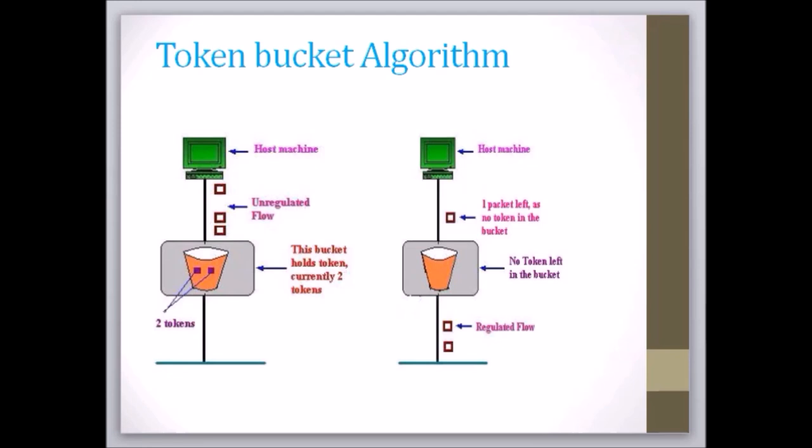In this algorithm, the bucket holds tokens generated at regular intervals. Main steps of this algorithm are described as follows. At regular intervals, tokens are thrown into the bucket. The bucket has a maximum capacity. If there is a ready packet, the token is removed from the bucket and the packet is sent.